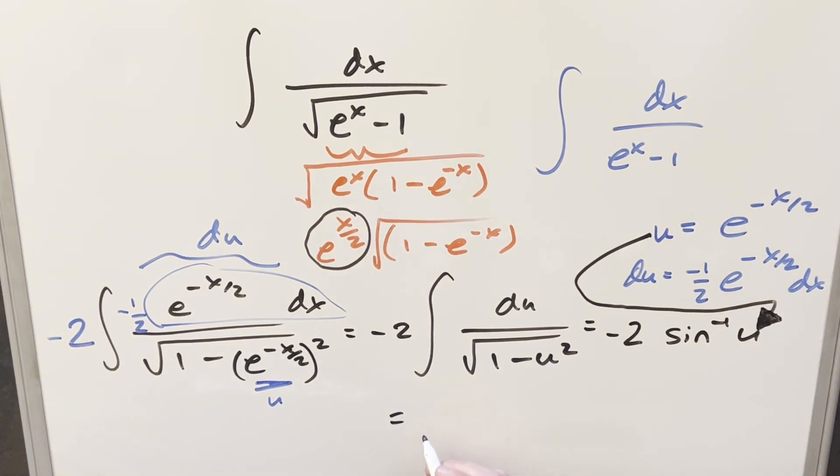So for my final solution of this, we just have minus 2 arcsine e to the minus x over 2, add a plus C, and that's it.